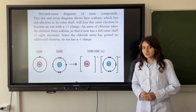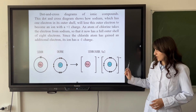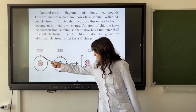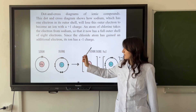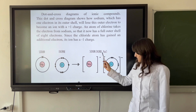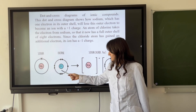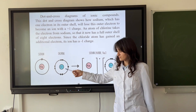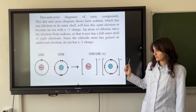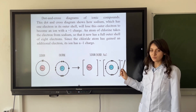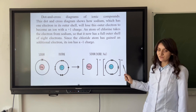Dot and cross diagrams of ionic compounds. This dot and cross diagram shows how sodium, which has one outer electron, loses that electron to become an ion with a plus one charge. The atom of fluorine takes the electron from sodium, so that it now has a full outer shell of eight electrons. Since the fluorine atom takes the electron, its ion has a minus one charge.